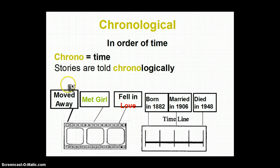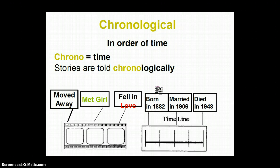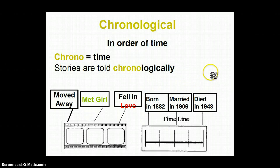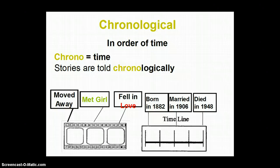The first text structure is chronological. You should know from Greek and Latin roots that 'chrono' means time, so if a story is told chronologically, it's told in order of time. What happened first, second, third, next, last? A lot of stories — especially history, historical fiction, and historical nonfiction — are generally told in order of time. This is probably going to be the most common text structure.